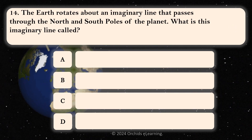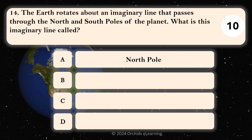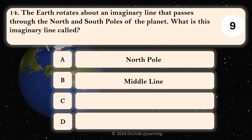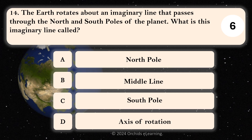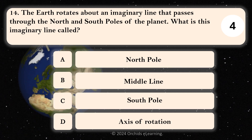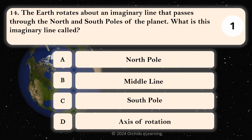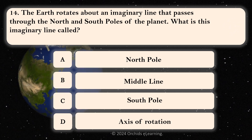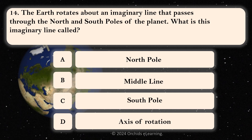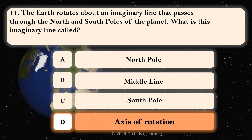The Earth rotates about an imaginary line that passes through the north and south poles of the planet. What is this imaginary line called? D. Axis of Rotation.